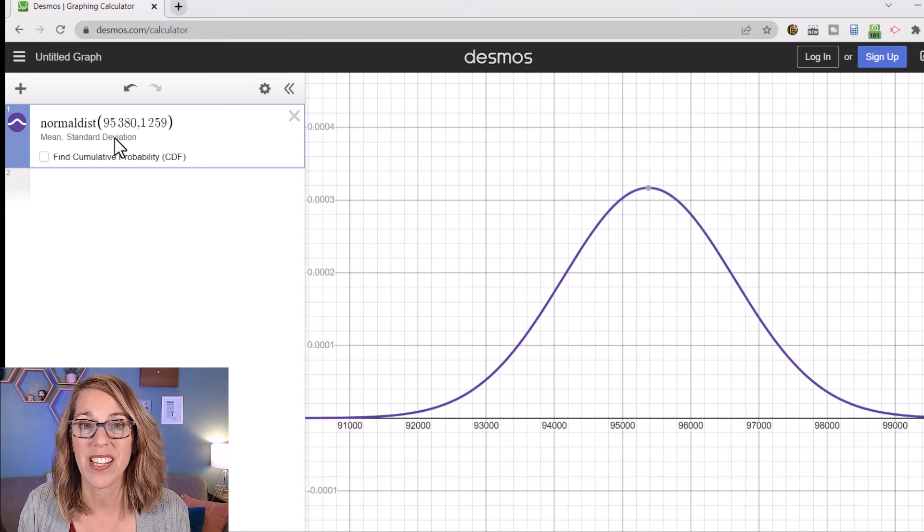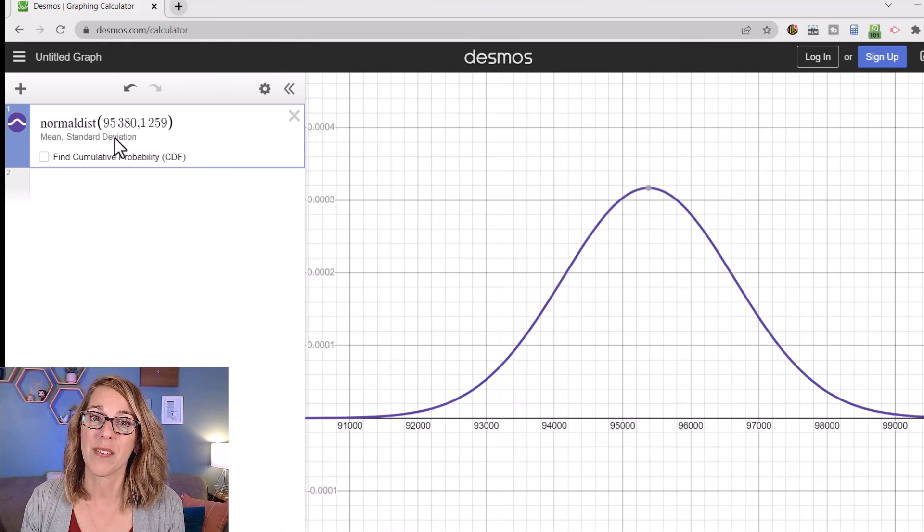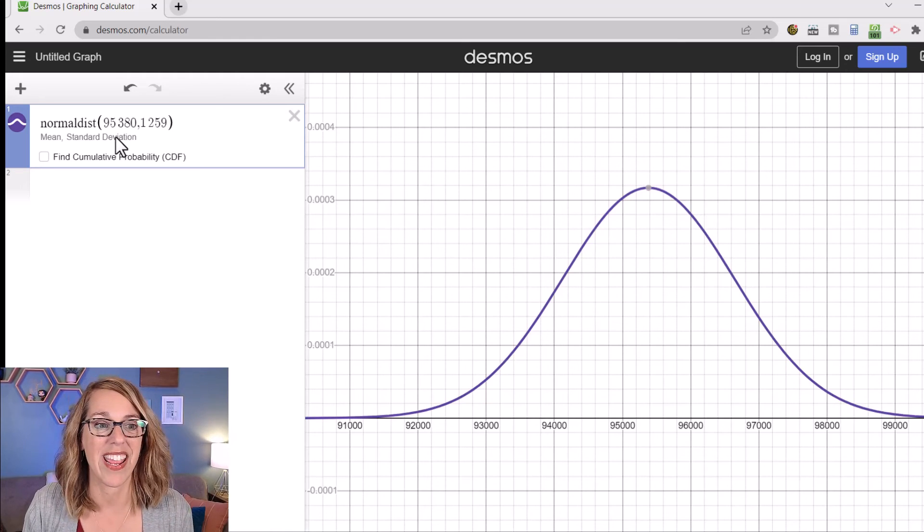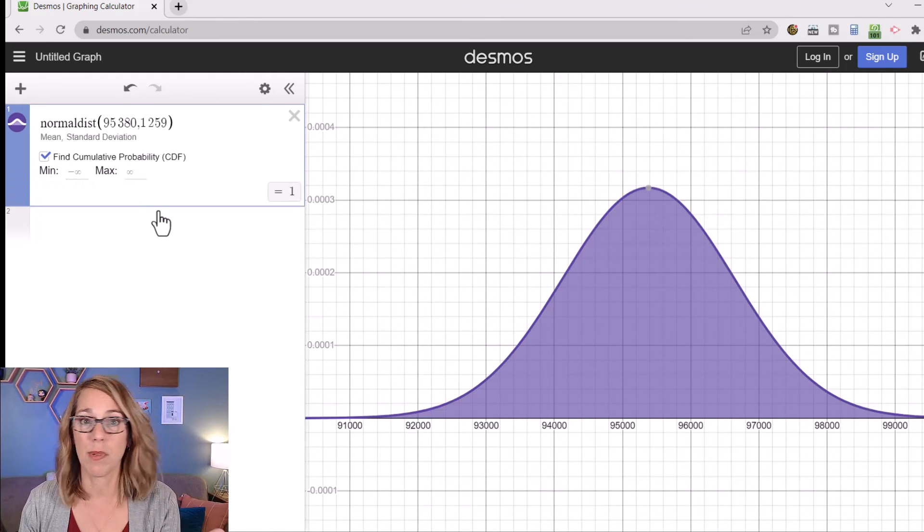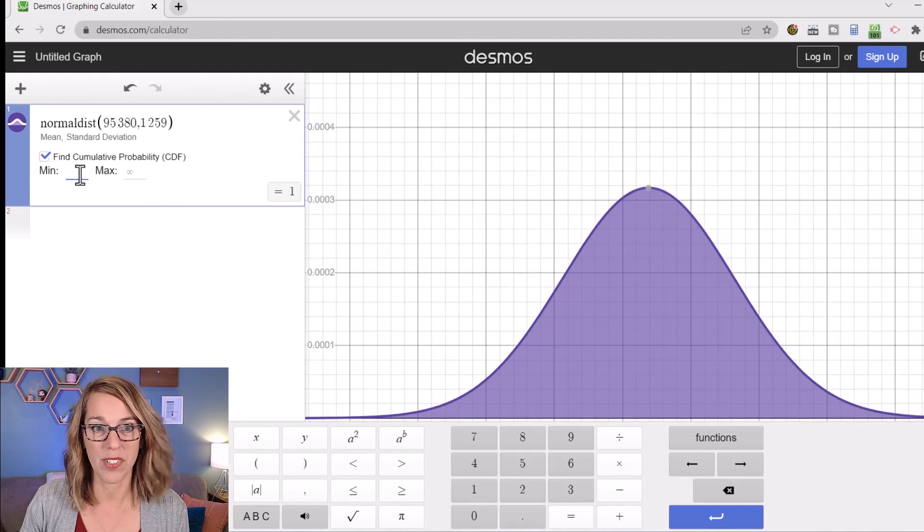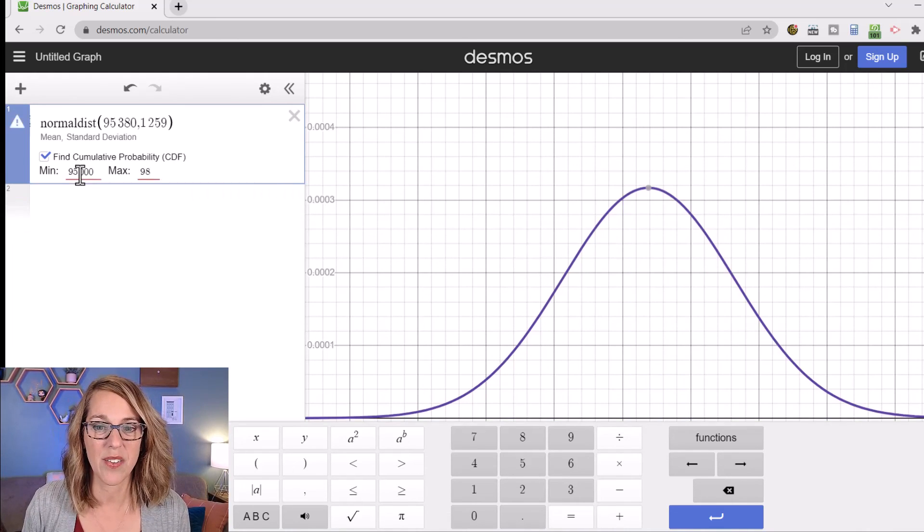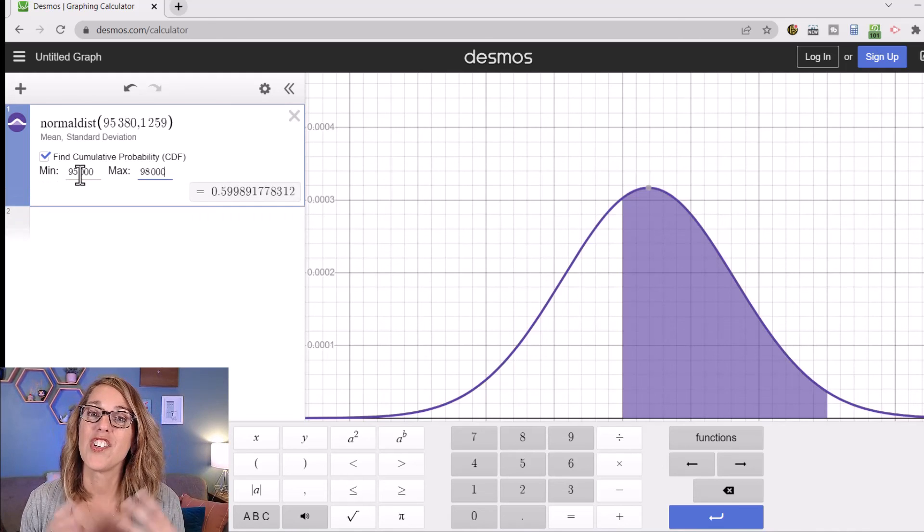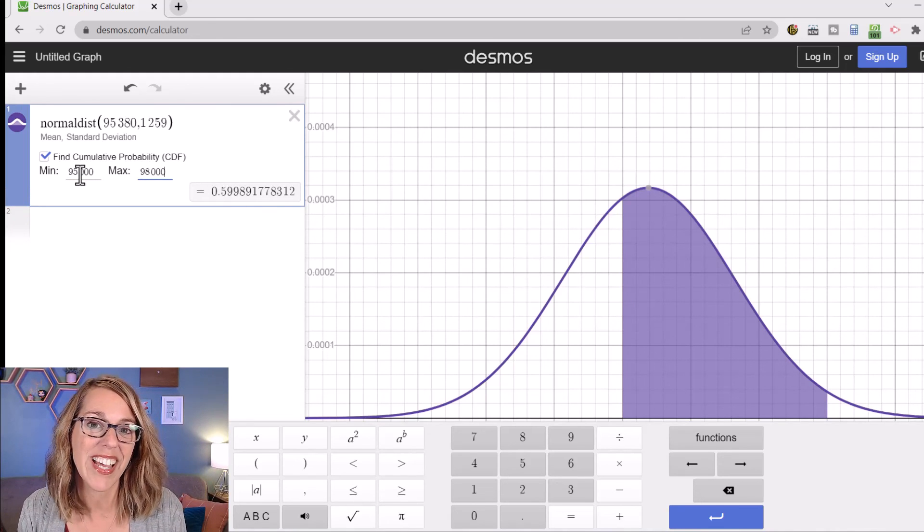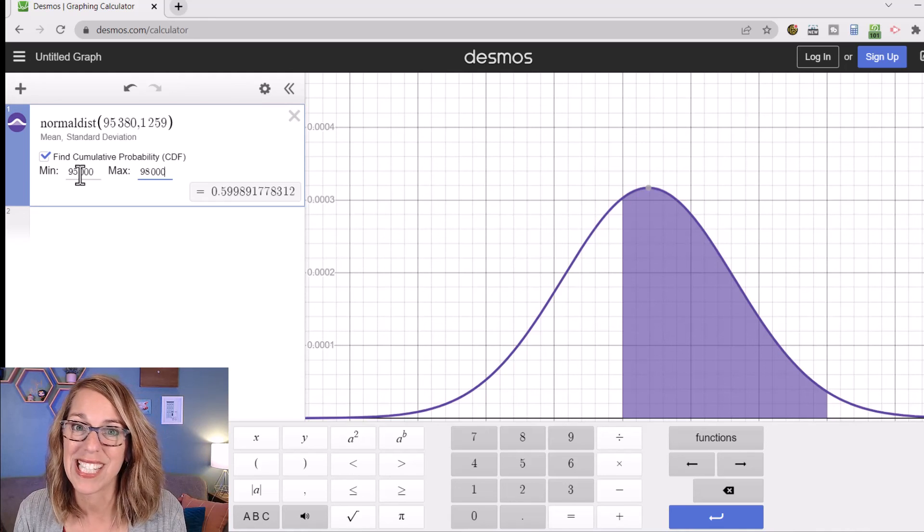I want to find the probability that a person selected at random has a salary between $95,000 and $98,000. So I'm going to click on find cumulative probability. It gives me my default probability, which would be one or 100% for everybody. But I want the probability that a person selected at random, their salary is between $95,000 and $98,000. And it shades my area and also gives me that probability of about 60%.